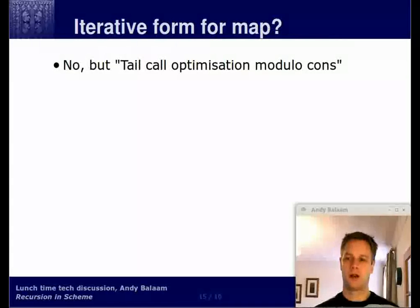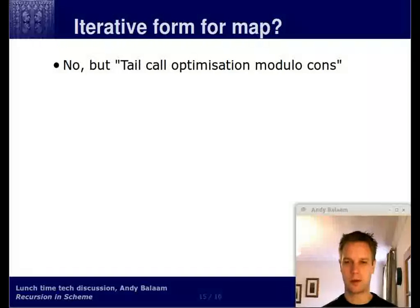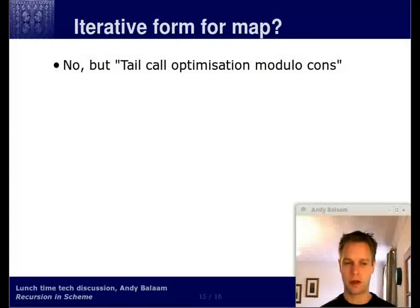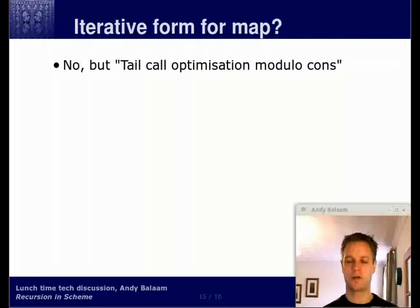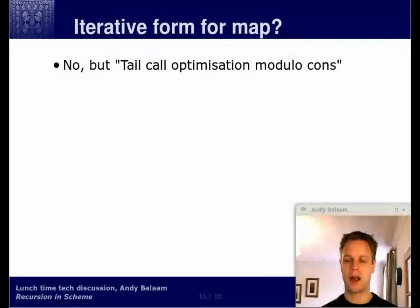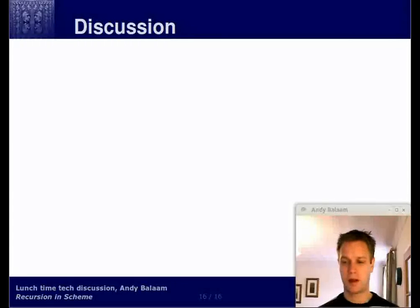Can we create an iterative form of map? The answer is no, because at the end of your implementation of map you're doing something with the result of recursion — using cons — rather than just recursing directly. However, some Scheme interpreter implementations use a special extra bit of memory to store just the information needed to do that cons, which is a relatively small amount of memory, and you can act as if you've got tail call optimization in that case as well. But that's definitely not something to cover today, and that's it for today.